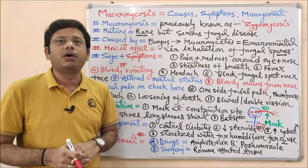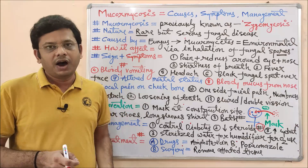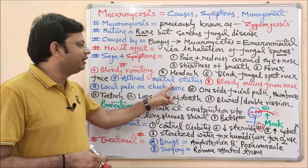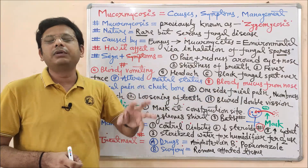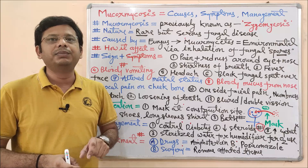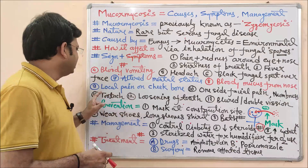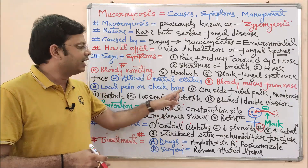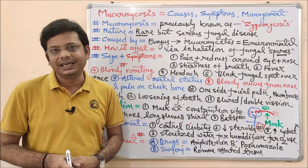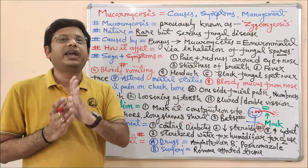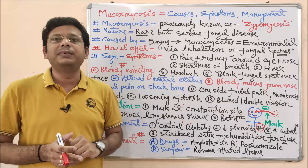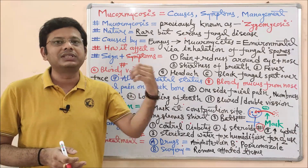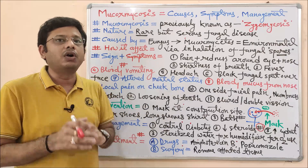There is also headache. Blood with mucus from the nose is another symptom — the mucus released will be black in color along with some drops of blood. Local pain on the cheekbone is also present. Additionally, there is one-sided facial pain along with numbness, meaning a loss of sensation either on the left or right side of the face.